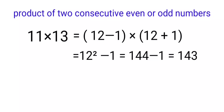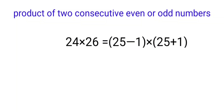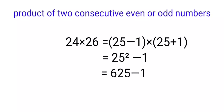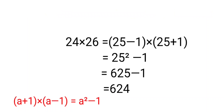Take two consecutive even numbers: 24 × 26. Write 24 as (25 − 1) and 26 as (25 + 1). Using the formula (a+1)(a−1) = a² − 1, we get 25² − 1 = 625 − 1 = 624. This identity a² − 1 = (a+1)(a−1) will be covered further in Chapter 9.